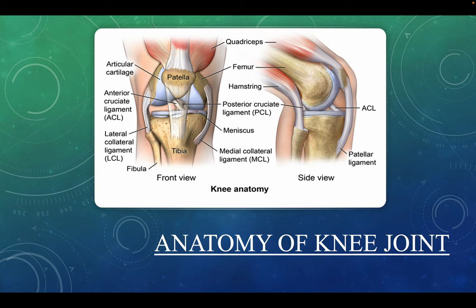Starting with the anatomy of the knee joint — a short overview since this is something we already know. The knee joint is the largest joint in the body. It is made up of the lower end of the femur, the upper end of the tibia, and the patella. The ends of these three bones where they touch are covered with articular cartilage, a smooth substance that protects the bones and enables them to move easily.